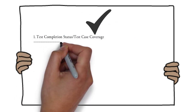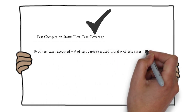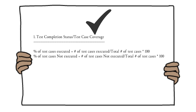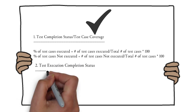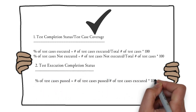The first calculated metric is test completion status. If our aim is to complete a thousand test cases in 12 days, we track daily completion percentage using the formula: (number of test cases executed / total number of test cases) × 100. Similarly, pending test cases percentage = (number of test cases not executed / total) × 100. This gives the test completion status on a daily basis.